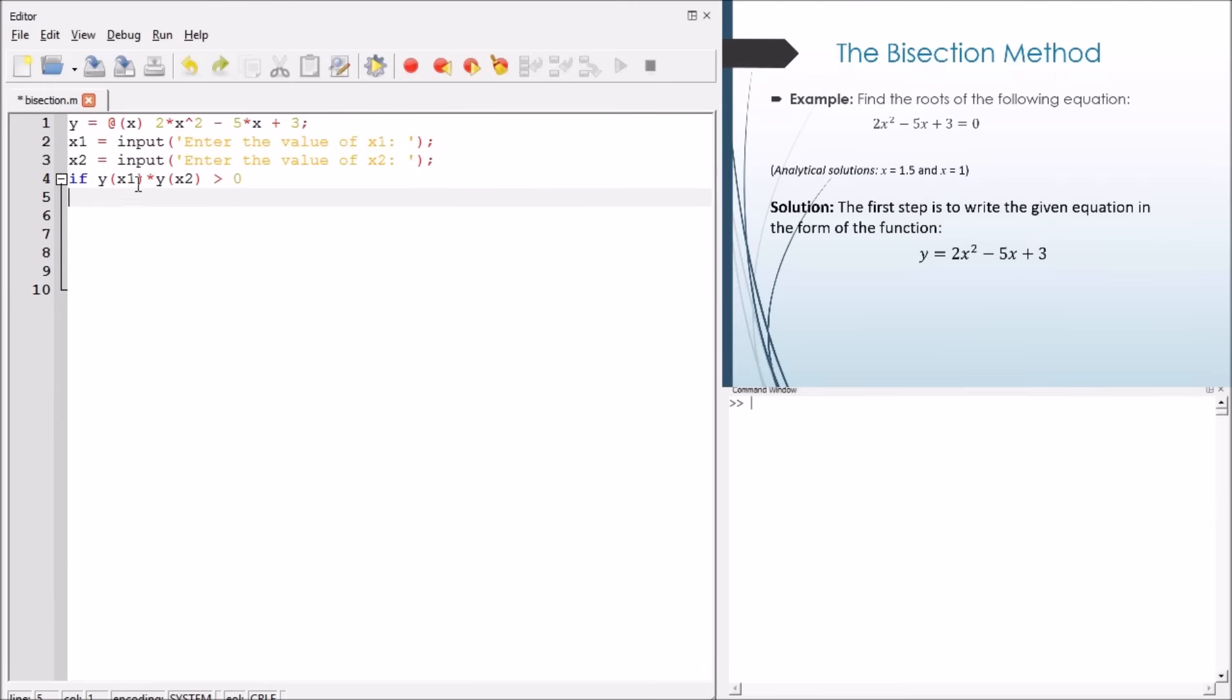Now, if the product is positive, that means they have the same sign, that means no root exists within the given interval. We stop the run of the code, we return to the console, and we'll make a new run in order to input new values of x1 and x2. If the products are negative or not larger than 0, that means we have a root.